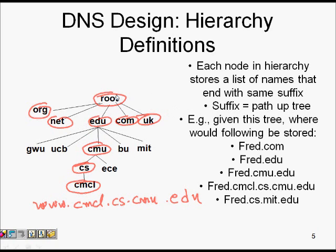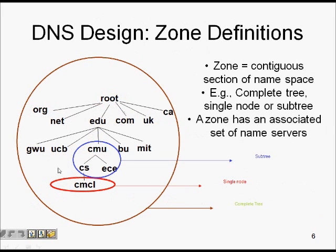Even if Stanford or MIT also have a CS department with the same sub-names, the full domain name will be unique because the university name differs — for example, cmcl.cs.mit.edu versus cmcl.cs.cmu.edu. The whole tree forms a zone, and you can also have sub-trees within it.